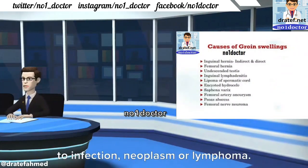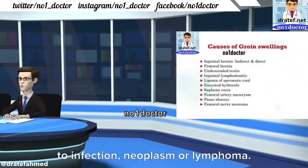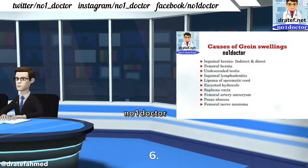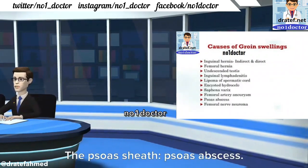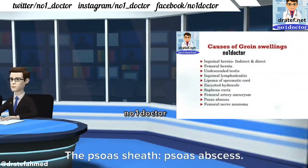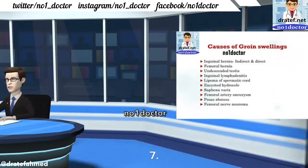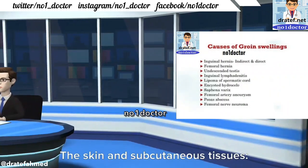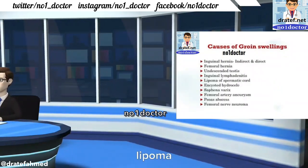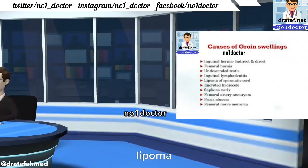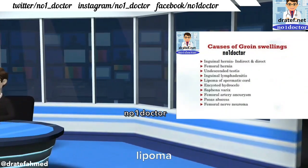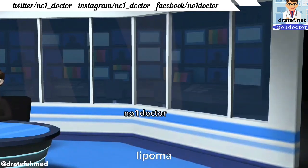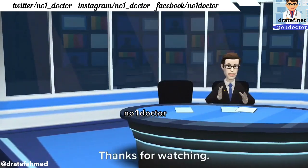Six: the psoas sheath — psoas abscess. Seven: the skin and subcutaneous tissues — lipoma.